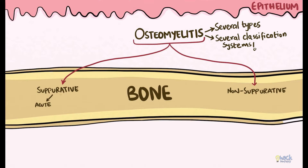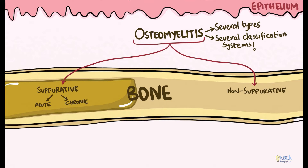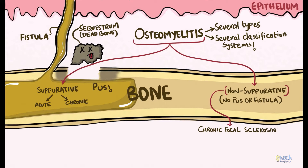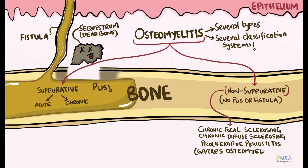Suppurative osteomyelitis has an acute and a chronic form. This disease is characterized by formation of pus, fistulae, and sequestrum. Non-suppurative osteomyelitis, on the other hand, comprises a group of chronic conditions where there is no suppuration or formation of fistula. This group includes chronic focal sclerosing osteomyelitis, chronic diffuse sclerosing osteomyelitis, and chronic osteomyelitis with proliferative periostitis, also called Garré's osteomyelitis.